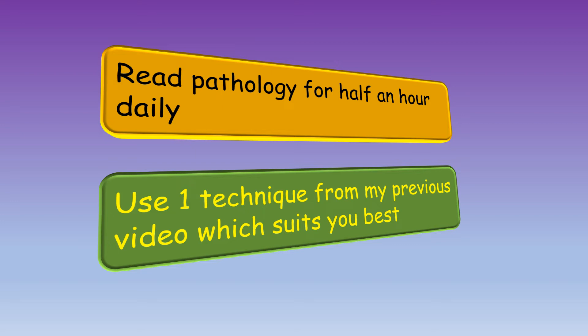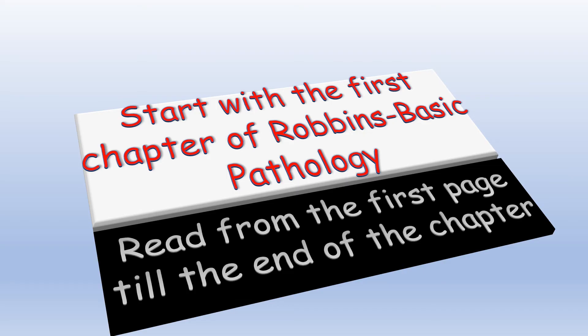Step 1: Use any one of the techniques from the previous video which suits you best to read pathology for half an hour, preferably at the same time daily. Step 2: Start with the first chapter of Robbins and read from the beginning to the end. It's okay if you feel you don't understand anything — it will all make sense in the end. Keep at it and trust the process.